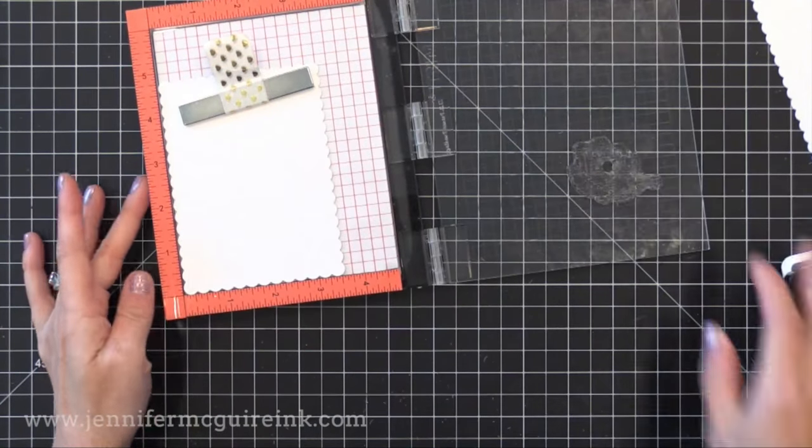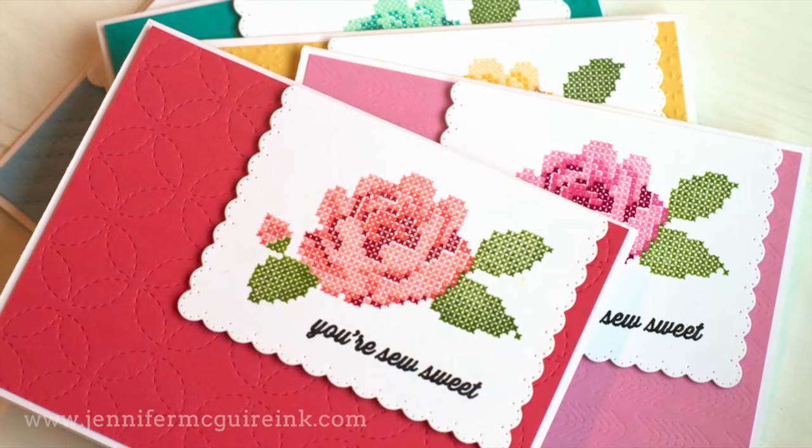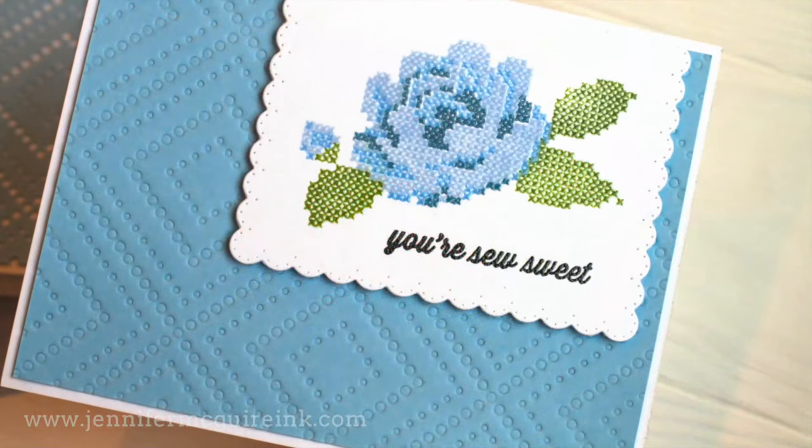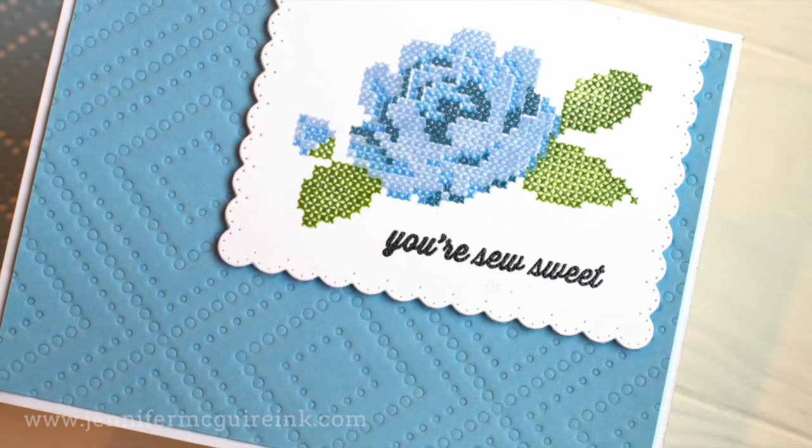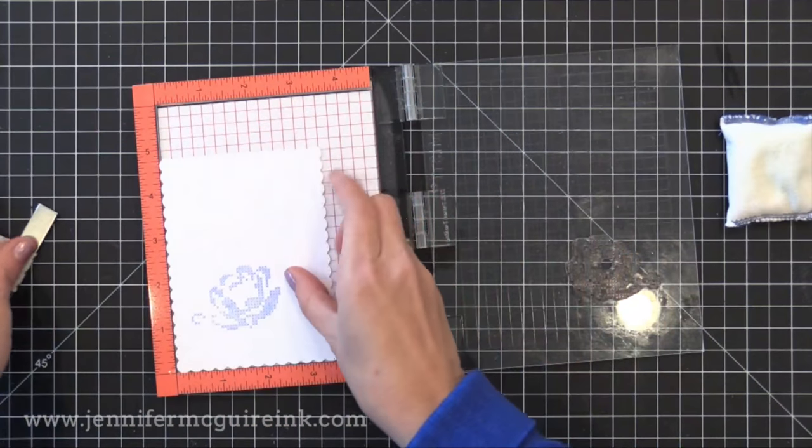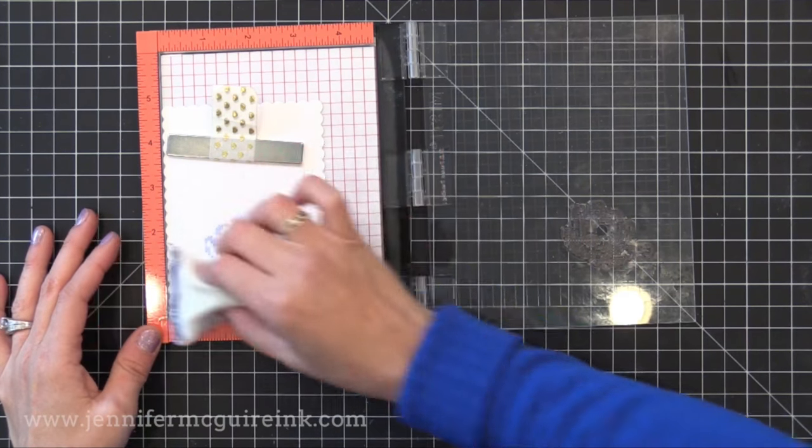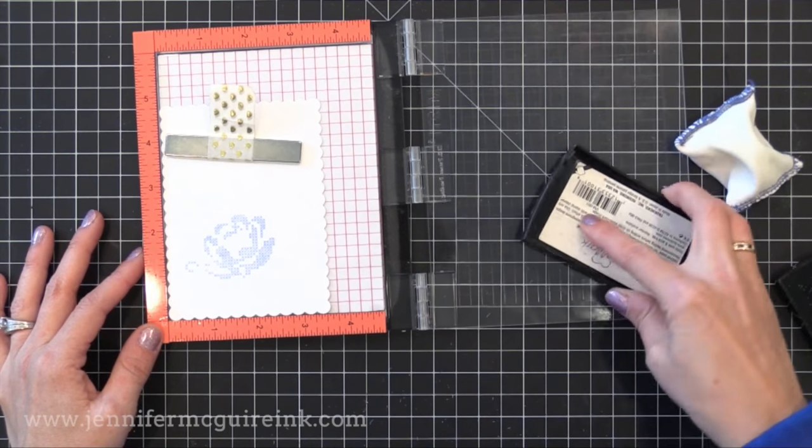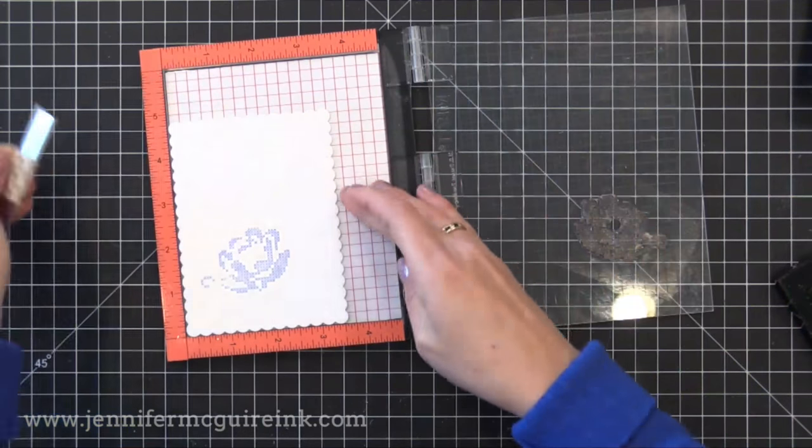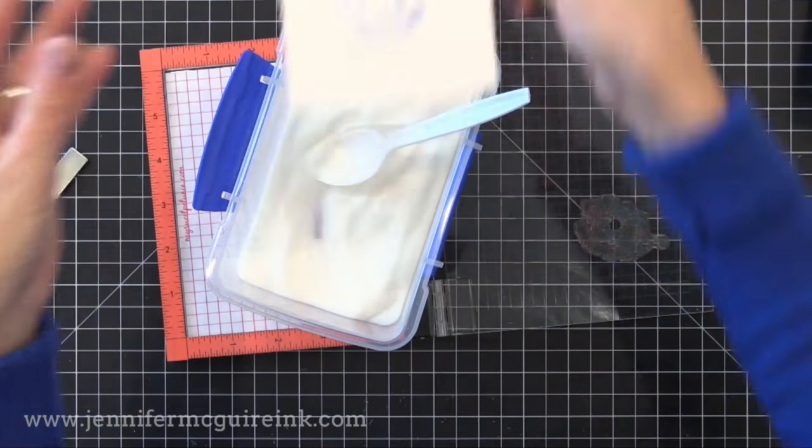Okay, so I went ahead and did the first layer of all the different color combinations, and now I wanted to show you a fun trick. Before I move on to the next layer, I want to give all of the ink that I just stamped the look of heat embossing, but I don't have a bunch of colors of embossing powder. So what I'm going to do is go back and stamp on top of everything we just stamped with VersaMark ink and add clear embossing powder.